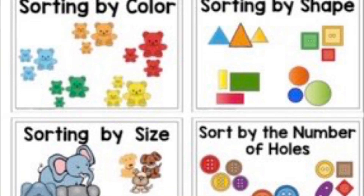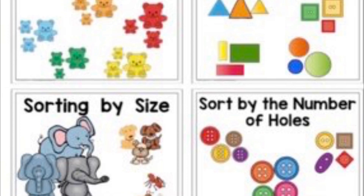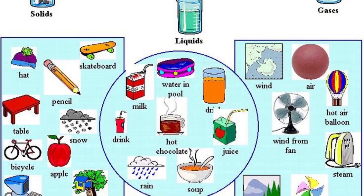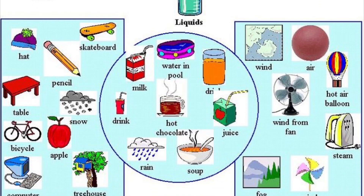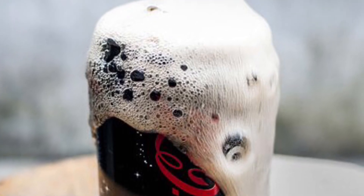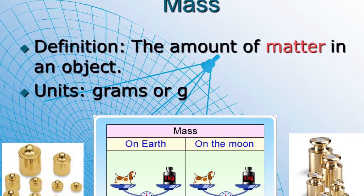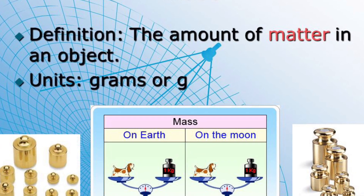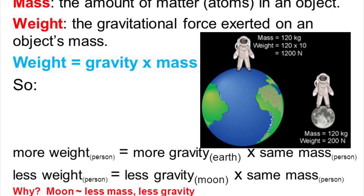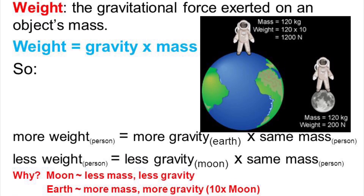You can observe properties like size, color, and shape. Physical states include solid, liquid, or gas — you can describe mixing a solid in a liquid, or a liquid with a gas. The amount of matter in an object is determined by its mass. Gravity times mass gives an object its weight.